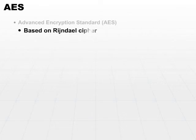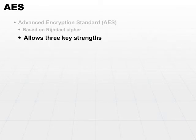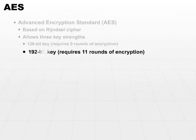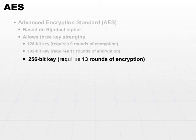It's based on the Rijndahl cipher and allows three different key strengths depending on what you need. There is a 128-bit key, which will require nine rounds of encryption, a 192-bit key that requires 11 rounds, and finally, a 256-bit key that ends up requiring 13 rounds of encryption. The number of rounds or iterations of encryption that are required depends, of course, on the key length.